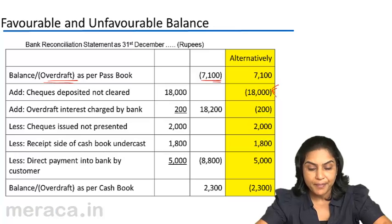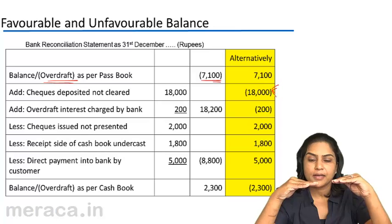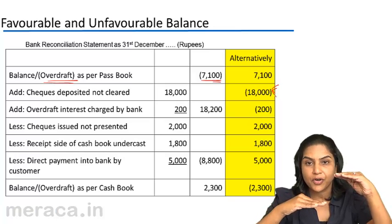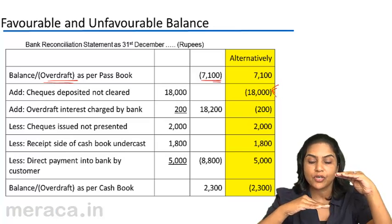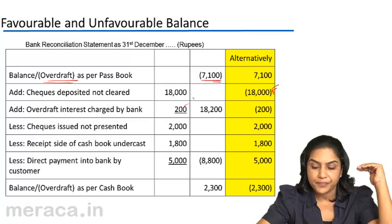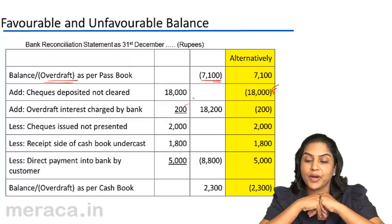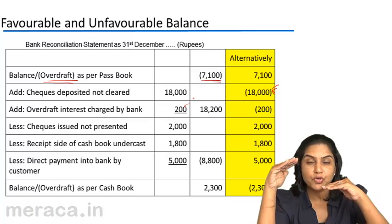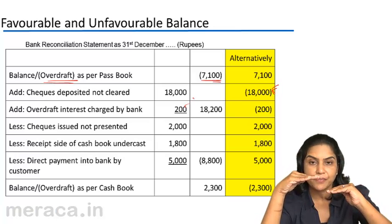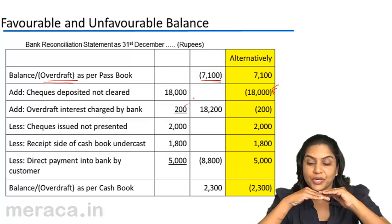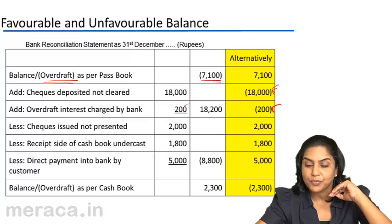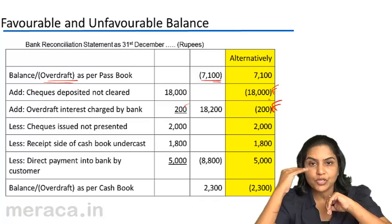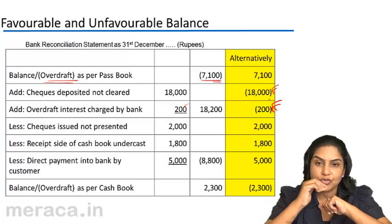When overdraft interest is charged by the bank, the passbook balance comes down — for an ordinary favorable balance, starting from the passbook to reach the cash book, we add 200. From the overdraft logic: when overdraft interest is charged, the passbook overdraft goes up. Starting from the passbook to arrive at the cash book, you deduct — we have deducted 200. Again, for individual cases, think what is to be done for a favorable balance and then do just the reverse for an overdraft balance.